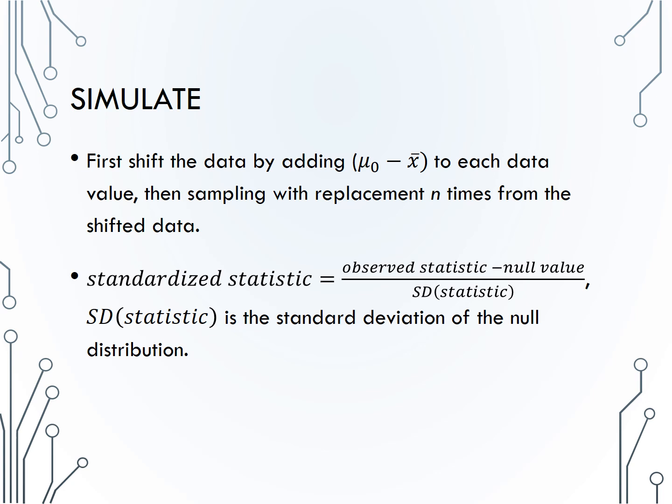See the video on single mean applets to see this in practice. Note that we can use the standard deviation of the simulated null distribution, which is the standard deviation of the simulated sample means, as the denominator in finding our standardized statistic. Our standardized statistic is still calculated by subtracting the null value from the observed statistic and dividing by the standard deviation of the statistic.